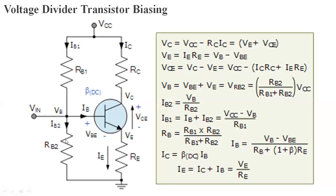The base voltage VB should equal the voltage across RB2, because of the voltage divider. The voltage divider formula gives VB equals (RB2 divided by RB1 plus RB2) times VCC — that ratio of the resistance from the total resistors determines how much of the supply voltage VCC appears at the base.